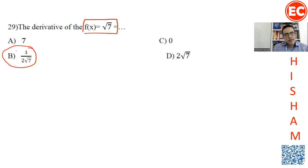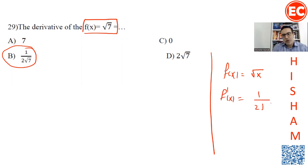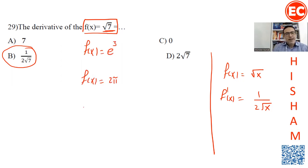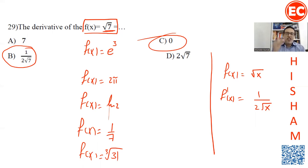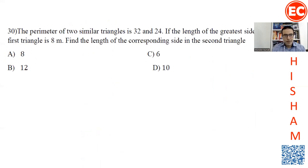Question 29: Find the derivative of root 7. The common mistake is that students think of the derivative of root x formula — one over 2 root x — and apply it. But root 7, e to the power 3, 2-point something, ln 2, 1 over 7, cubic root of 3 — all of these are constants. The derivative of a constant is always zero. Don't rush; if it's a number, its derivative is zero.